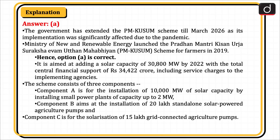The scheme aims at adding a solar capacity of 30,800 MW by 2022 with total central financial support of Rs. 34,422 crore, including service charges to the implementing agencies. The scheme consists of three components: Component A for the installation of 10,000 MW of solar capacity by installing small power plants up to 2 MW; Component B for installation of 20,000 standalone solar-powered agriculture pumps; and Component C for the solarization of 15,000 MW grid-connected agriculture pumps.